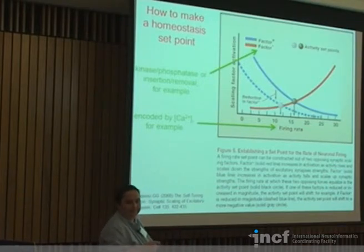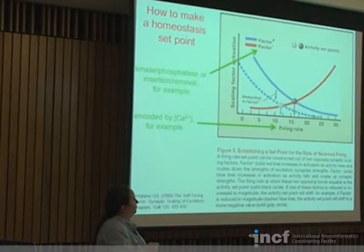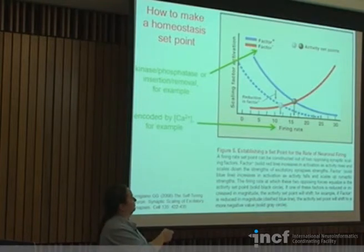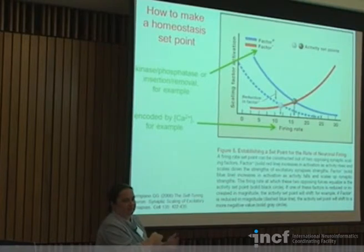A student asks: doesn't this just push the problem back a level? Because now the question is how do you get set points in factor-plus and factor-minus? The paper presents this not as pushing back a problem but as opening a door for adjusting a set point. But the instructor agrees — you still have to understand what regulates how much kinase and how much phosphatase there is, so in a sense it does push the problem back a little bit.